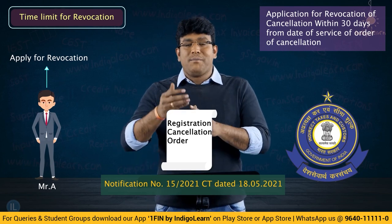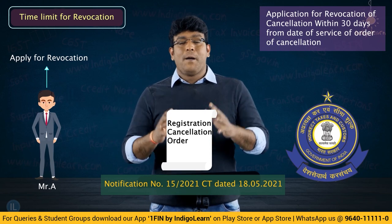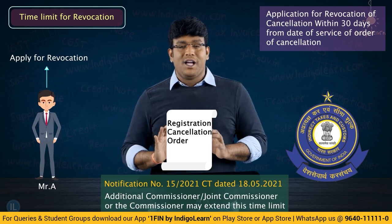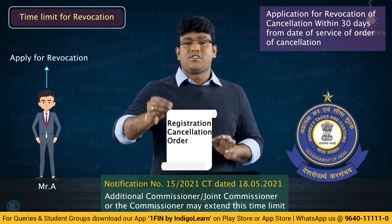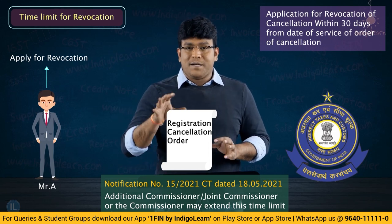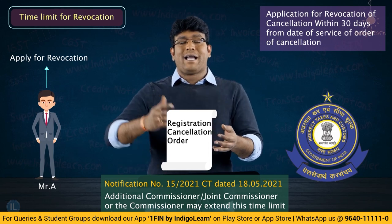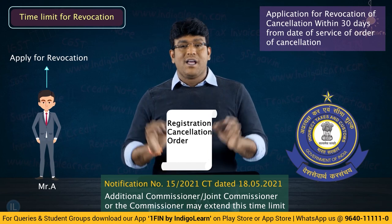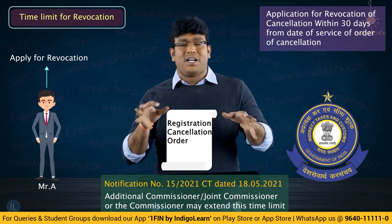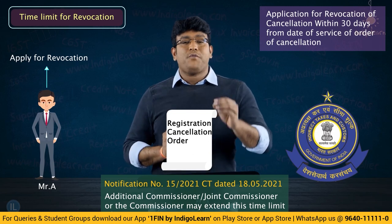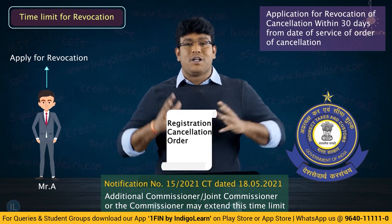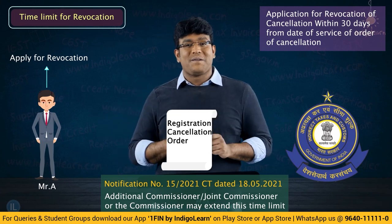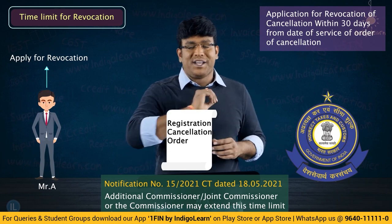Moreover, it can be further extended for another maximum 30 days by the Commissioner. So in short, even though the general time limit is 30 days from the date of service of the cancellation order, it may be extended by another 30 days by the Additional or Joint Commissioner, and again further 30 days by the Commissioner. This is a newly introduced amendment under Notification No. 15/2021, dealing with extension of time limit for revocation of cancelled registration.